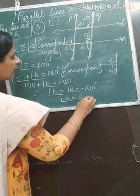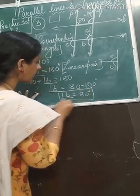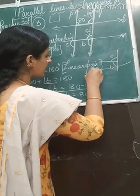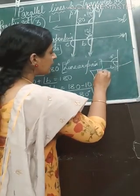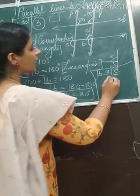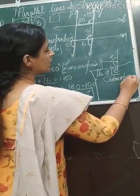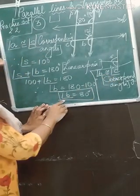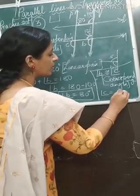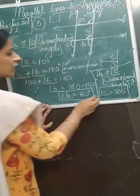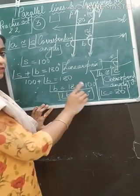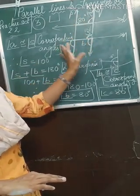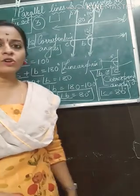Angle B is 80 degrees. Now what is the relation between angle B and angle C? They both are corresponding angles. So I will write angle B congruent to angle C. Reason: corresponding angles. Whenever I am saying something, I write the proper reason. So if B is 80, angle C will also be 80 degrees. So we got angle A = 100°, angle B = 80°, angle C = 80°.